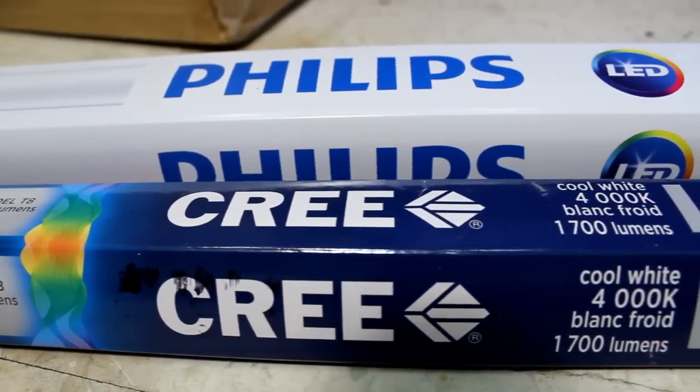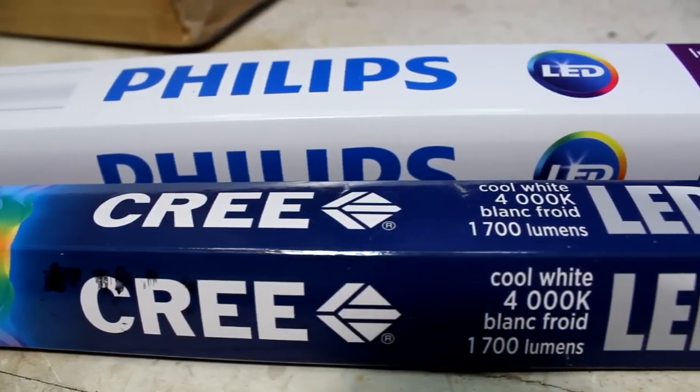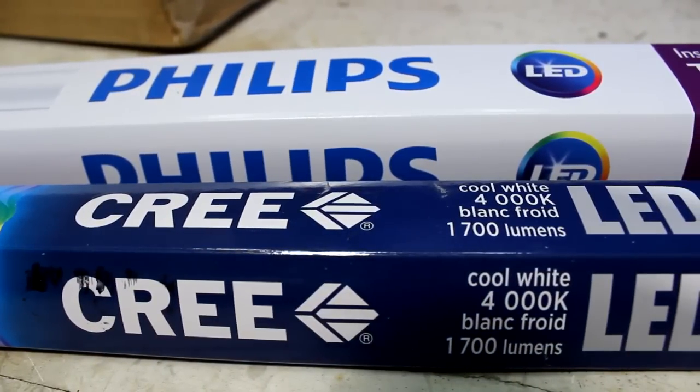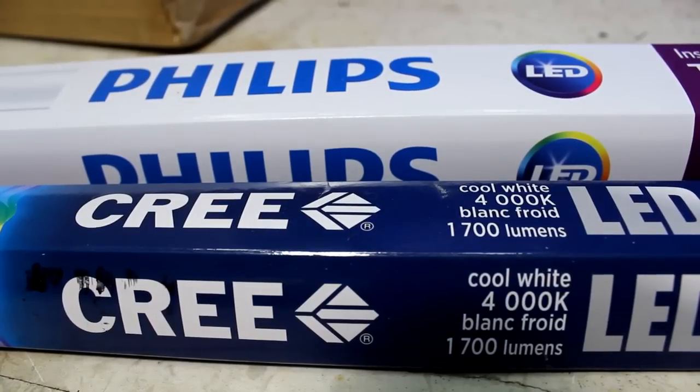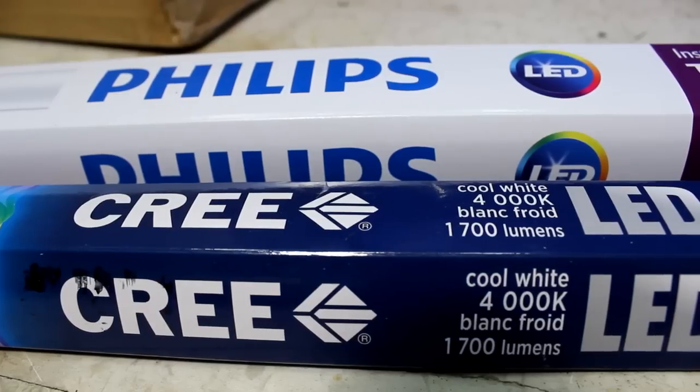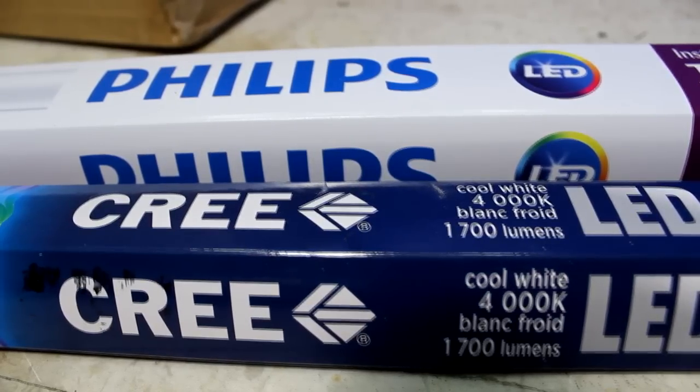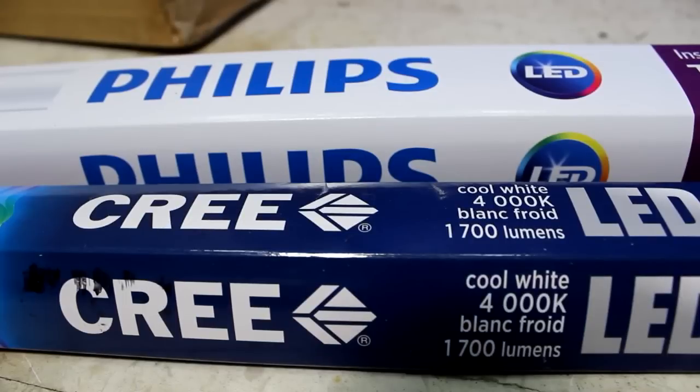I'm going to take a look at the Cree first and in a later video I'll take a closer look at the Philips. It's interesting these draw 18 watts which is less than the 32 watt T8 that they replaced and about 15 years ago I had to rewire this fixture because they were discontinuing the T12s which I think were drawing 40 watts each. So definitely a really promising sequence here in terms of energy consumption of these bulbs.